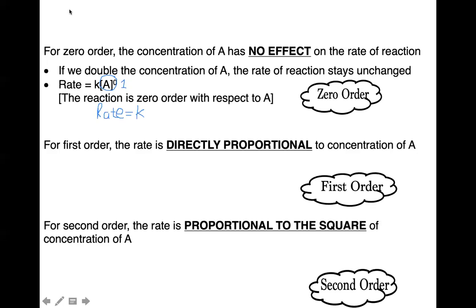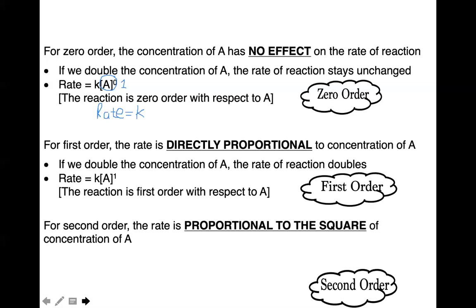The next order is first order. For first order, the rate is directly proportional to the concentration of A. Directly proportional means if you double the concentration of A, the rate will also double. If you increase the concentration of A by 6, the rate will also increase by 6. That's what directly proportional means.